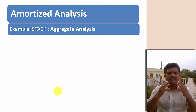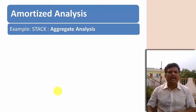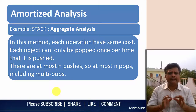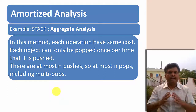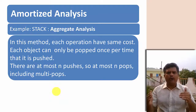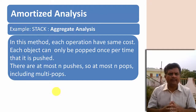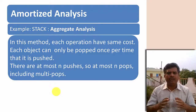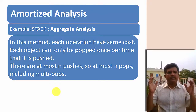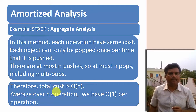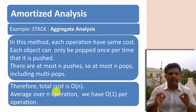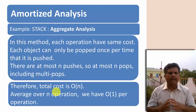Let us understand aggregate analysis using the stack data structure. In this method, each operation has the same cost. Each object can only be popped once per time that it is pushed. There are at most n pushes, so at most n pops are included in the multi-pop. Therefore the total cost is O(n), and averaging over n operations gives O(1) per operation.